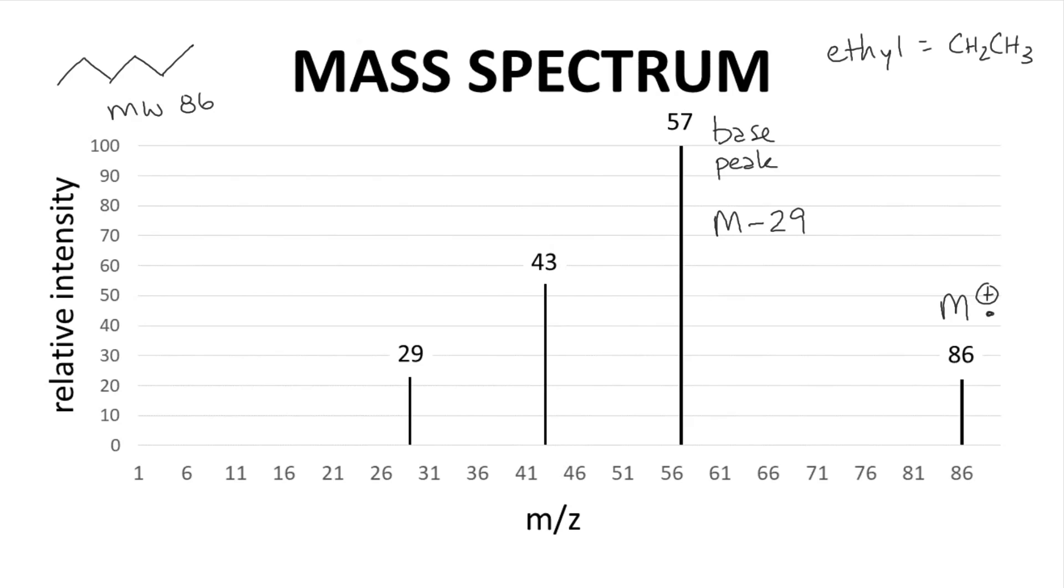So hexane has been ionized and fragmented. The cation fragment, a butyl cation, is detected at m/z 57. The radical fragment with a mass of 29, that's our ethyl radical, is not detected.